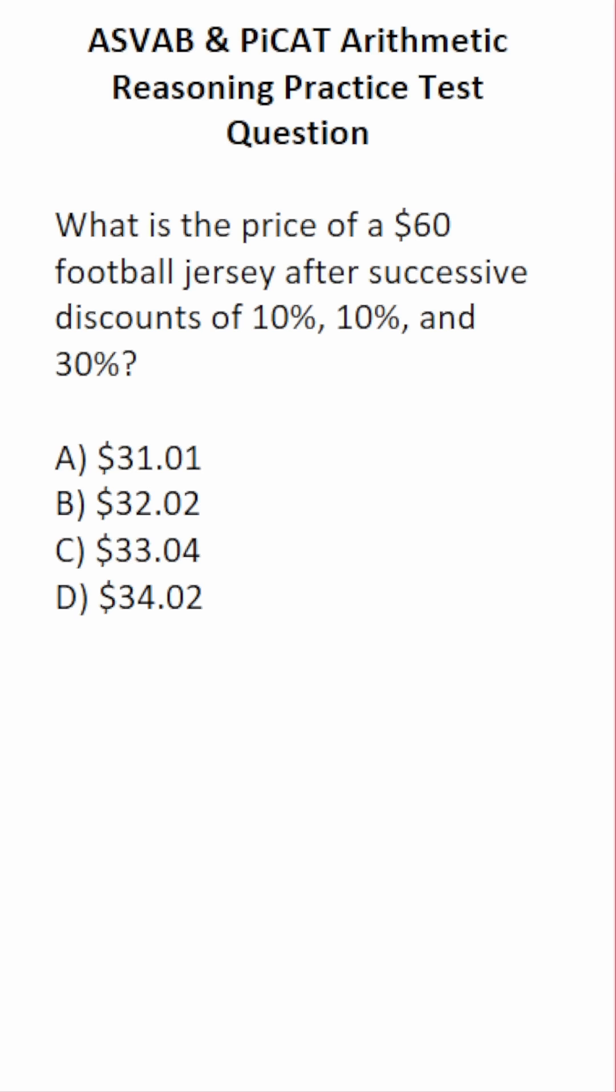The one thing you can't do for this problem is combine these discounts to be 50% and take 50% off. That will give you the wrong answer. You have to do these discounts one by one.